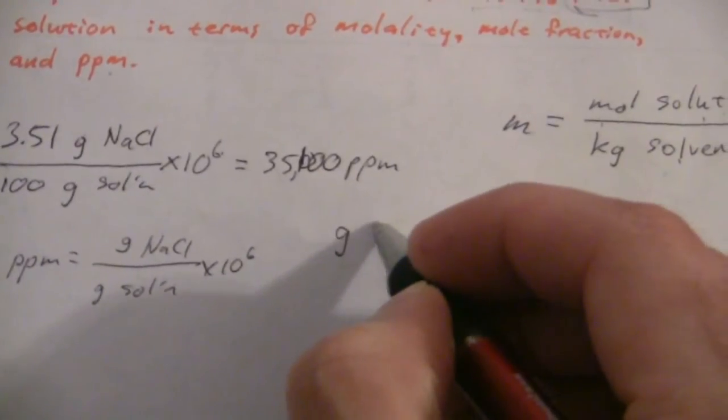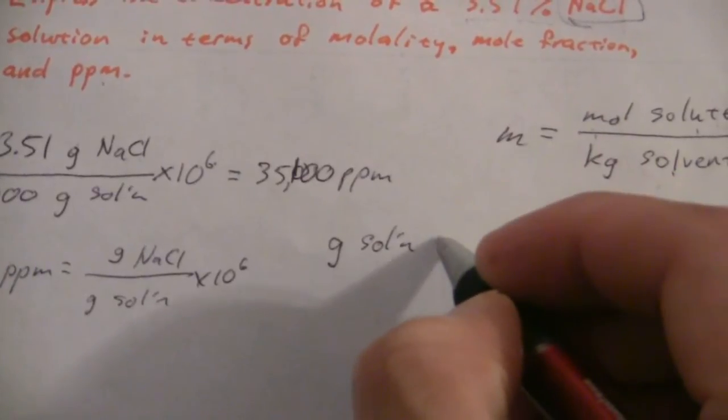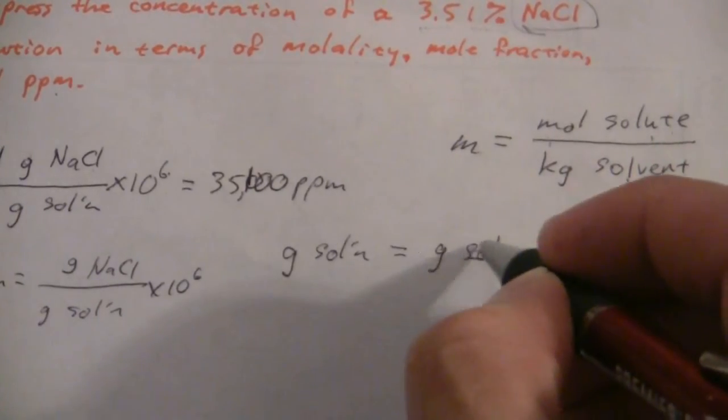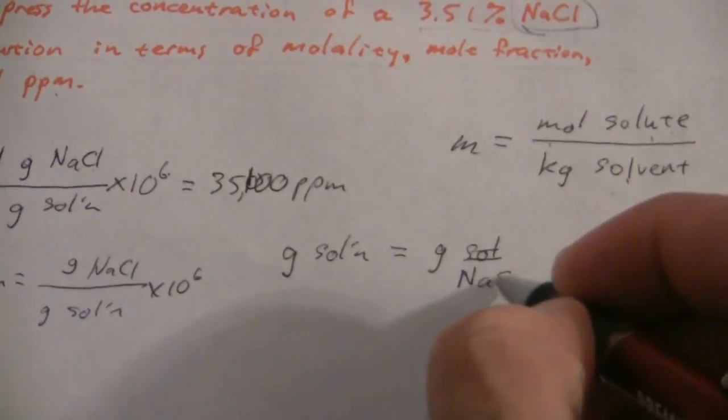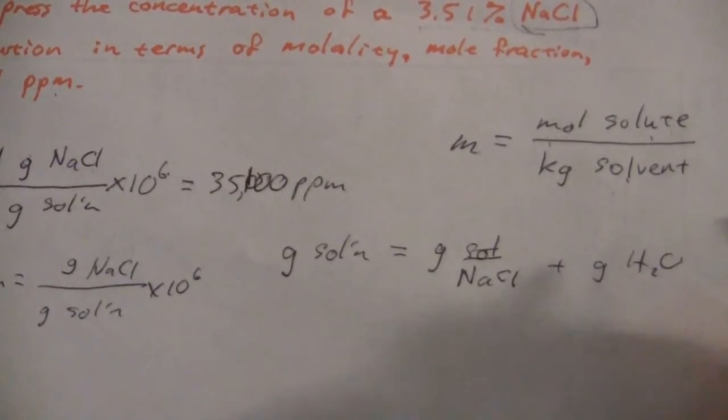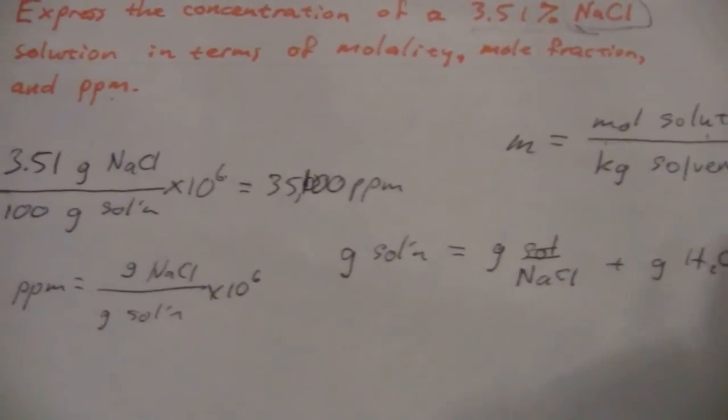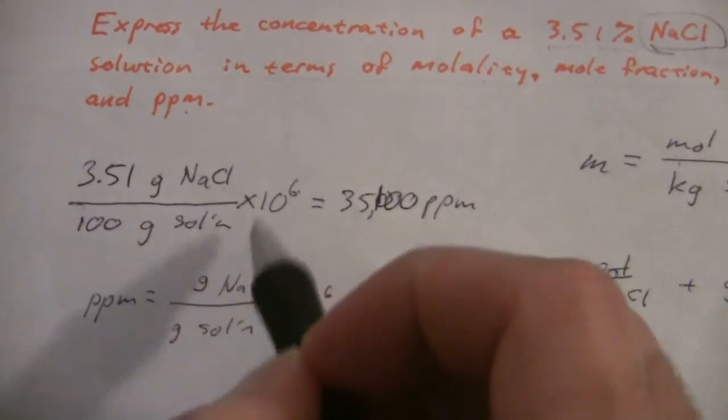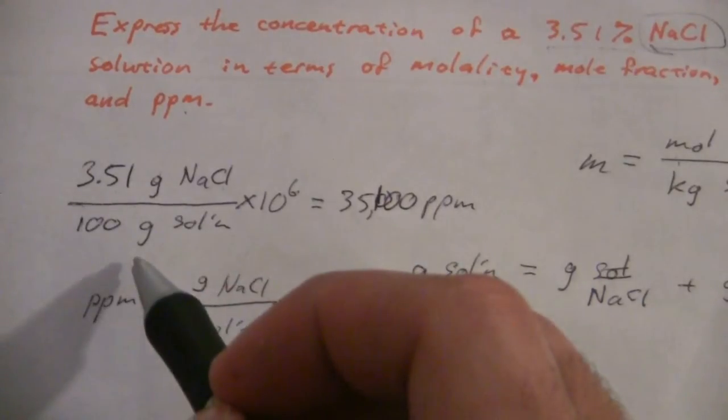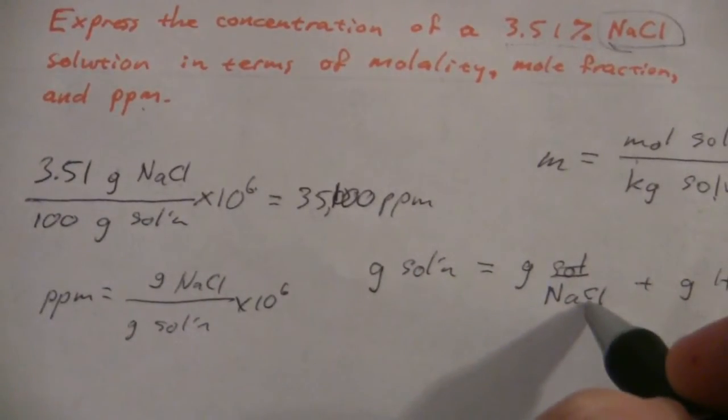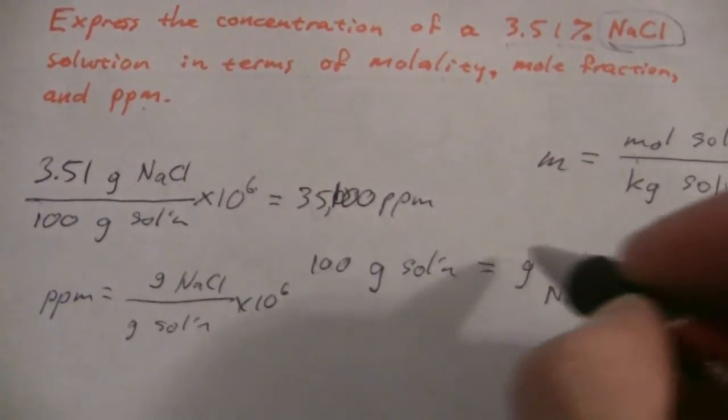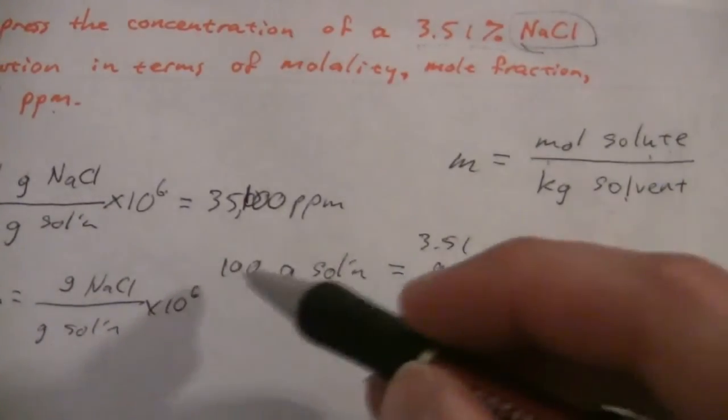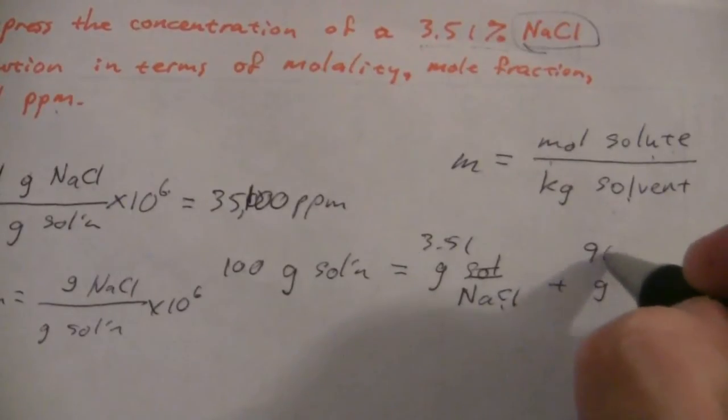We know that the mass of the solution is equal to the mass of the NaCl plus the mass of the water. So if I have a hundred grams of solution, what this is saying is that 3.51 of those hundred grams are NaCl. So in a hundred grams of solution, 3.51 are NaCl, so how much is water? Well, a hundred minus 3.51 is 96.49.